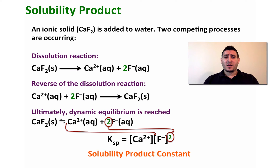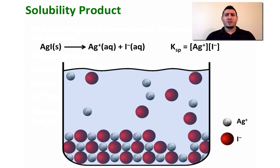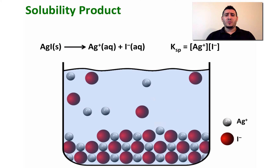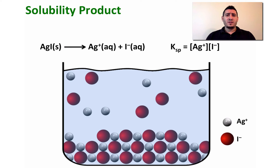This solubility product is a constant value at a constant temperature — it only changes when we change the temperature. For example, the dissolution of silver iodide gives Ag⁺ plus I⁻, and the Ksp equals [Ag⁺] times [I⁻]. Every time two ions leave the solution to the solid, two other ions leave the solid to the solution, so the number of ions in solution is always constant, keeping Ksp constant. If we change the temperature, the solubility of the solid changes and therefore the Ksp also changes.